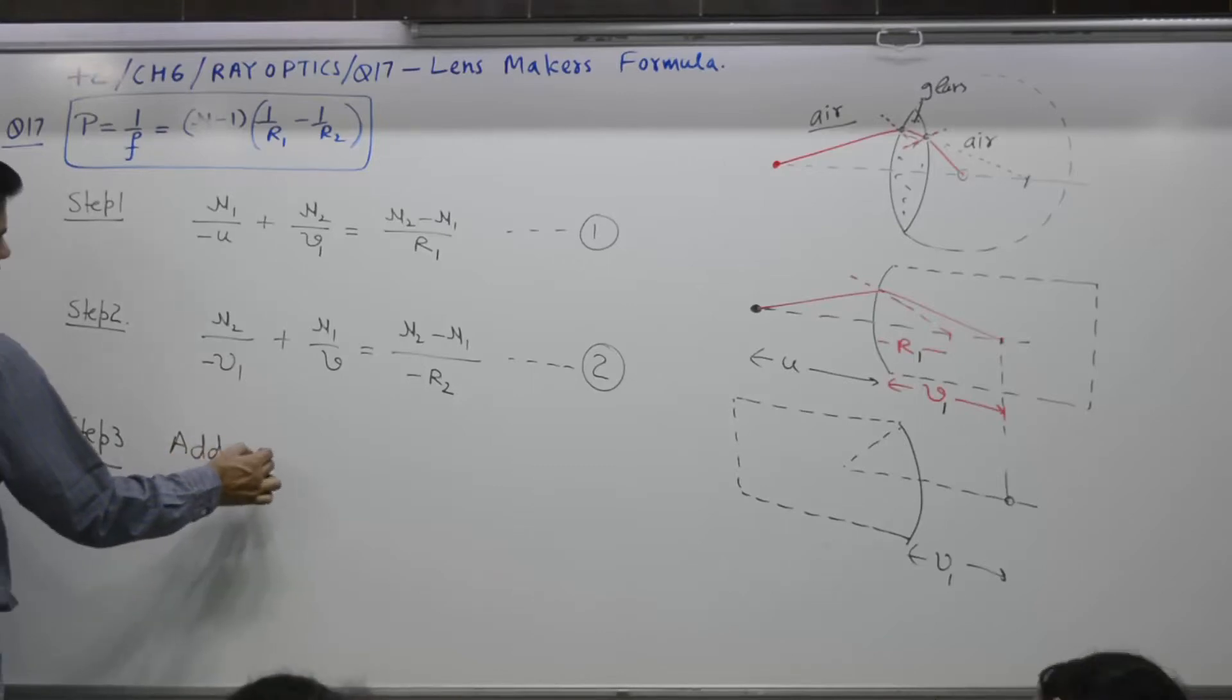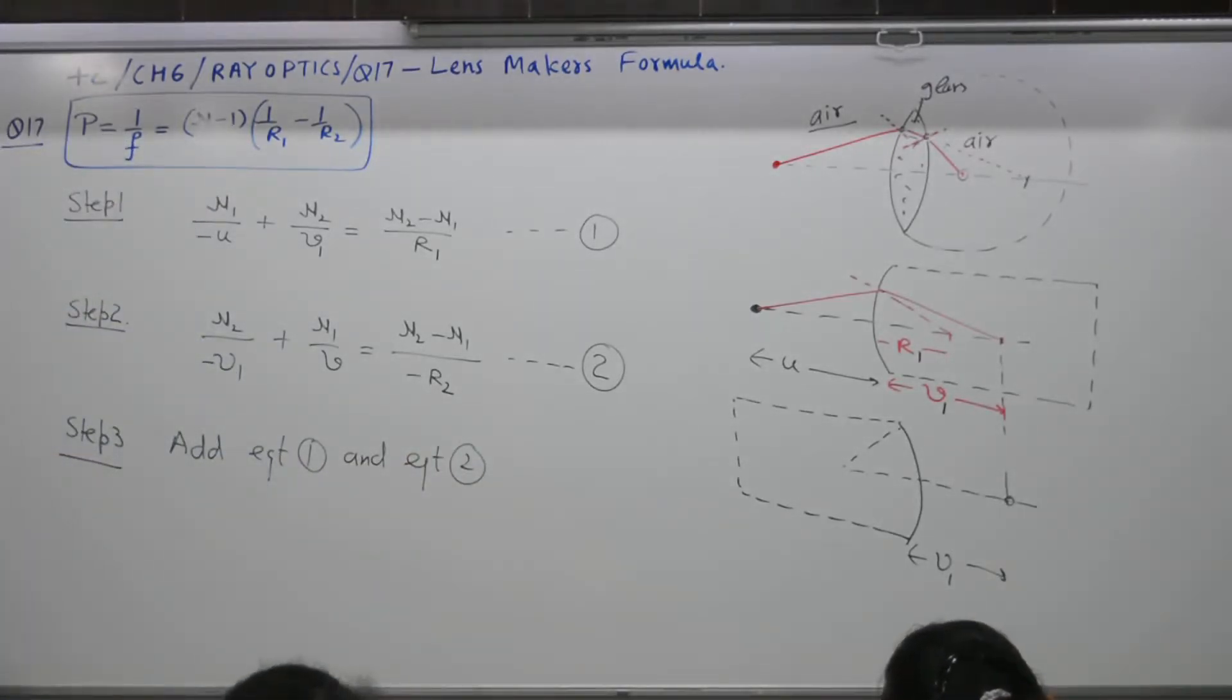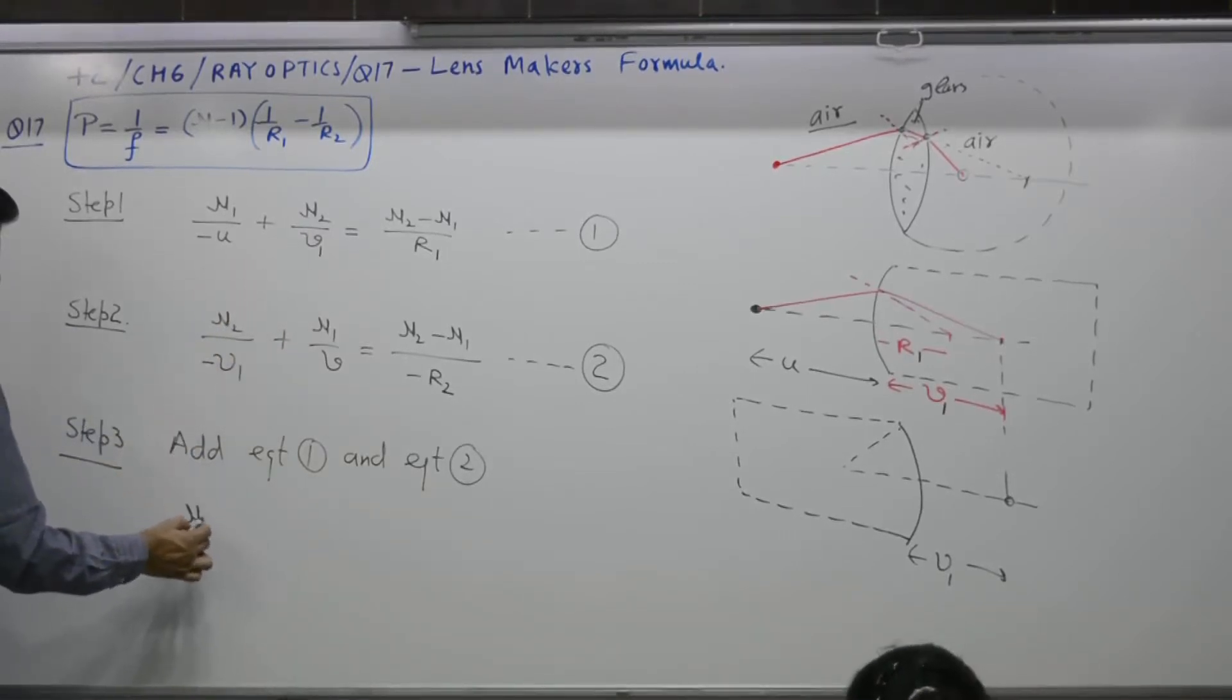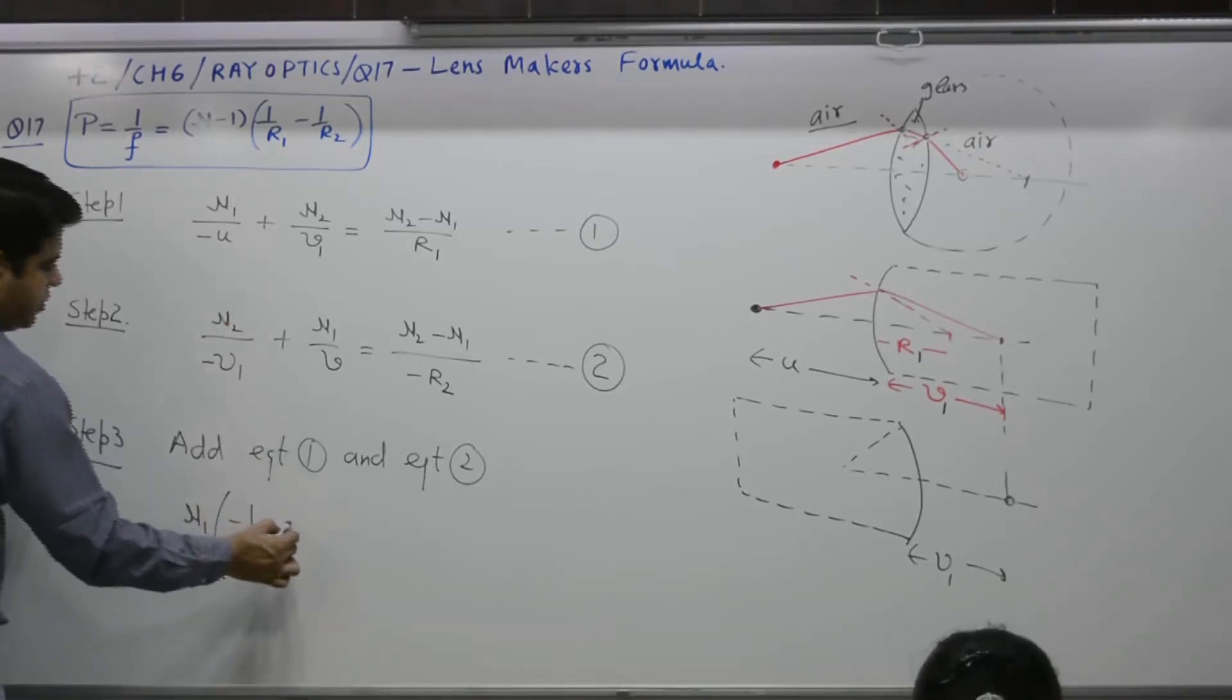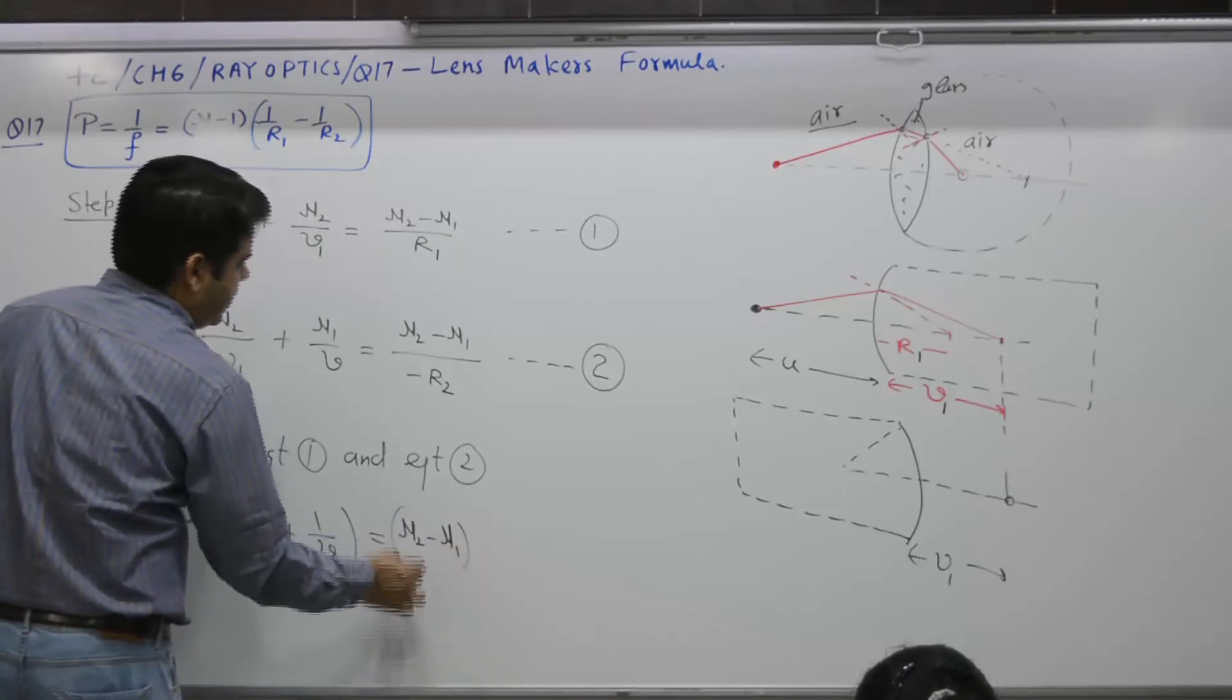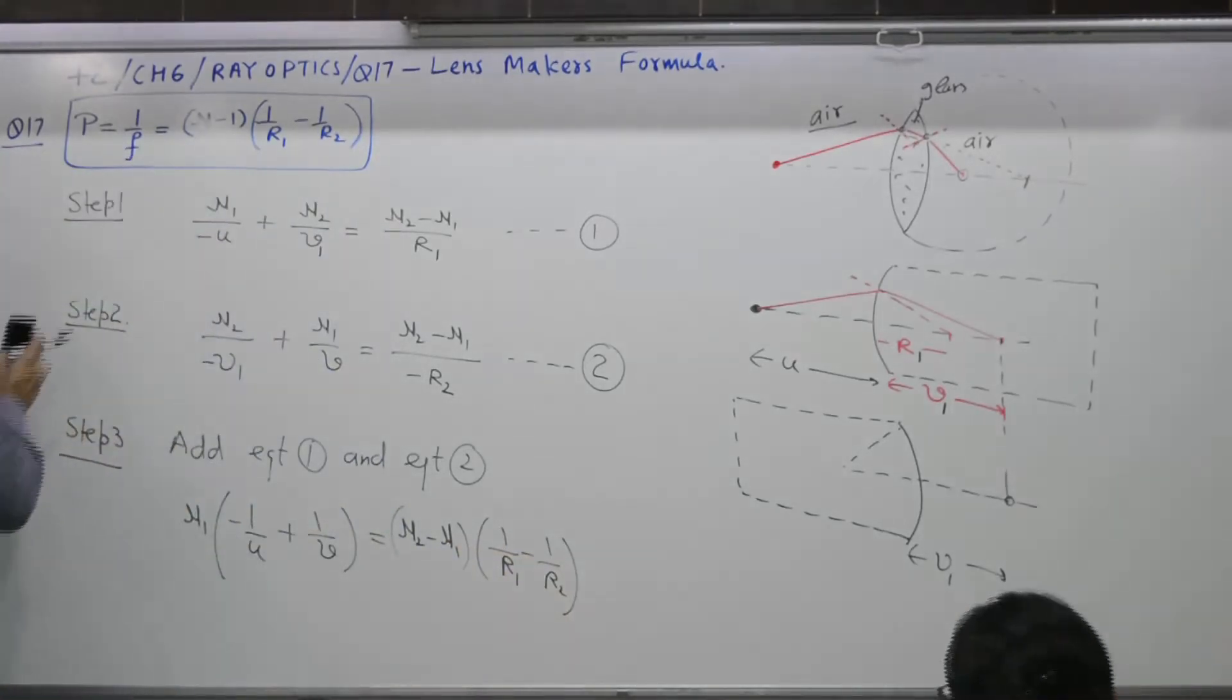Add equation number 1 and equation number 2. Yes, when you add these two, what is the outcome? This part is cancelled. What you are left with now? So, I will write this, nu1 over minus 1 by U plus 1 by V is equal to what? Nu2 minus nu1, 1 by R1 minus 1 by R2. So, this is the result.